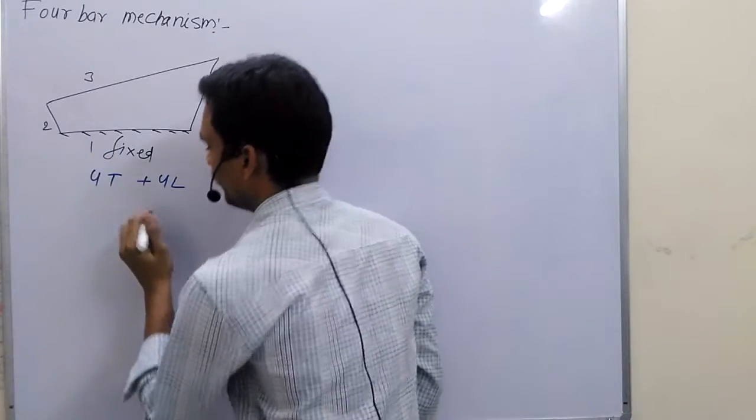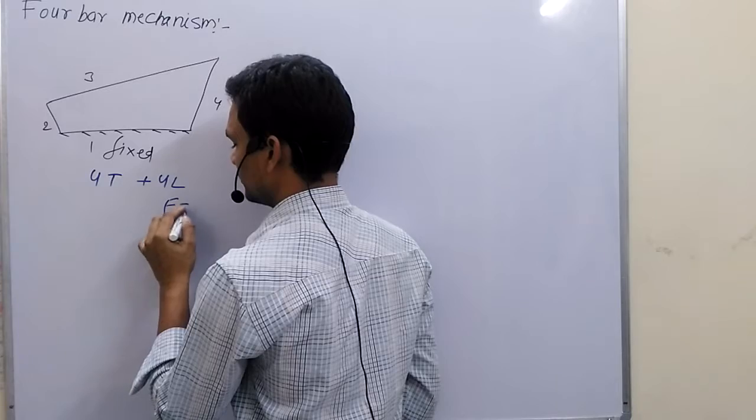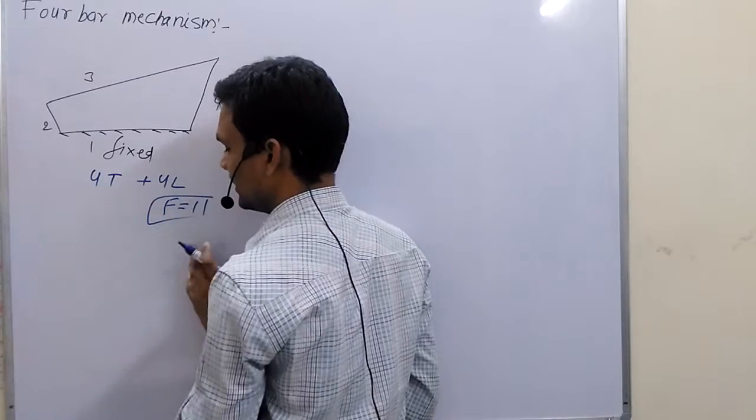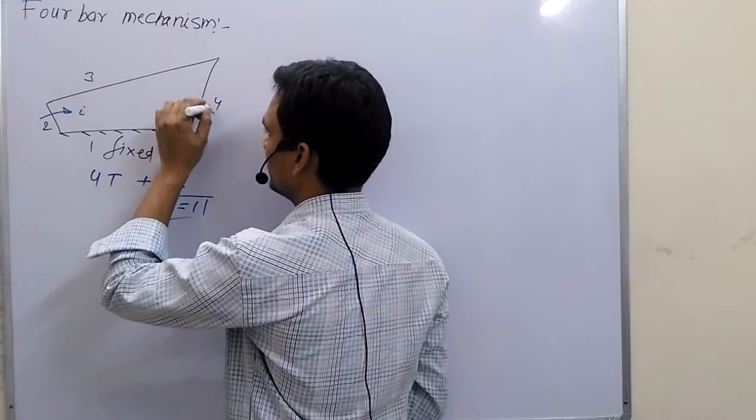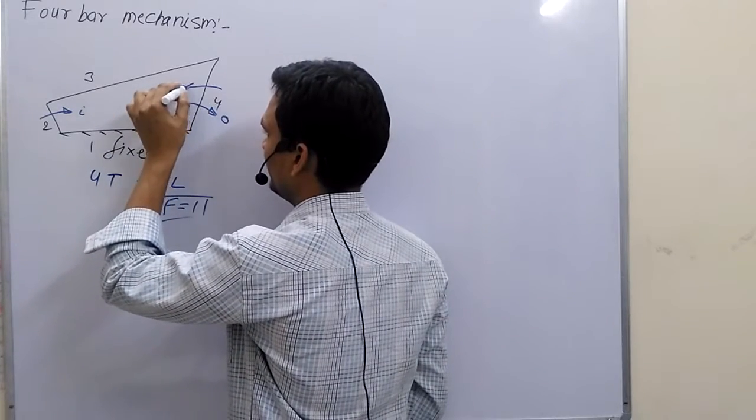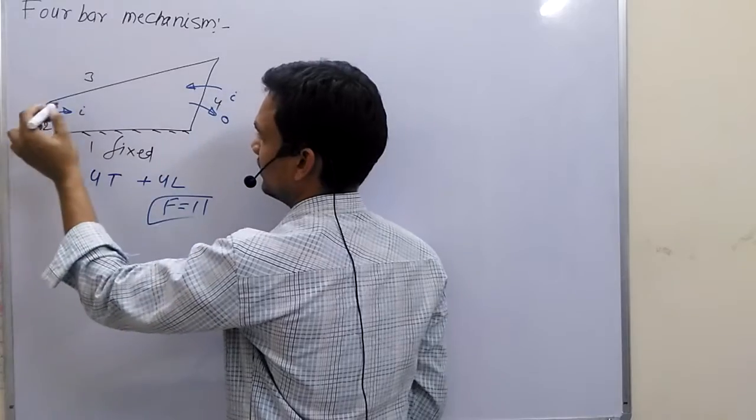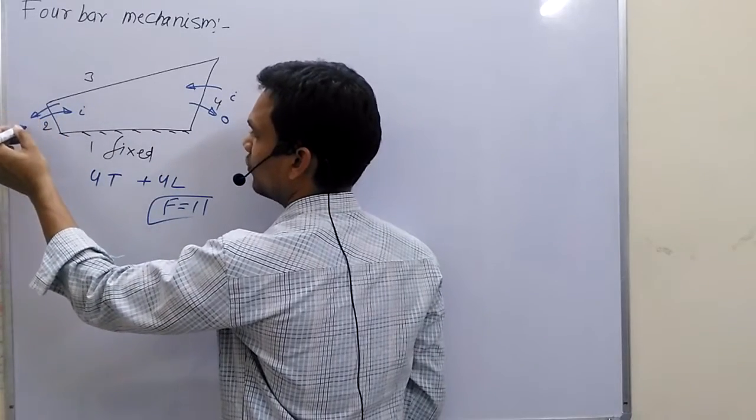Now, the degree of freedom for 4 bar chain mechanism. If we take this link as input, then this will be output. If we take this as input, then it will be output.